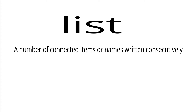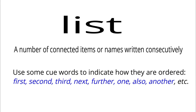List. A list is a number of connected items or names written consecutively. When we list items, we need to use some keywords to indicate how they are ordered. Consider this example where items are thrown out of order. Let's try to order them.